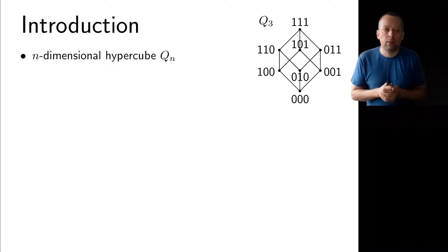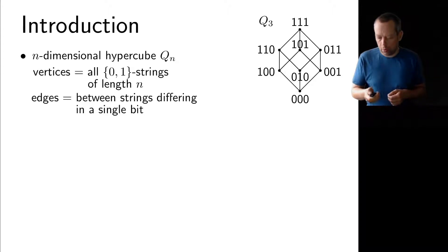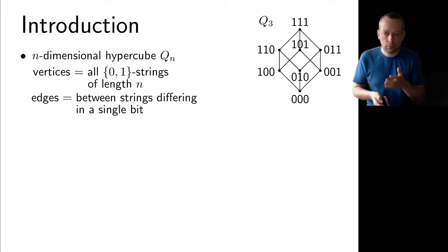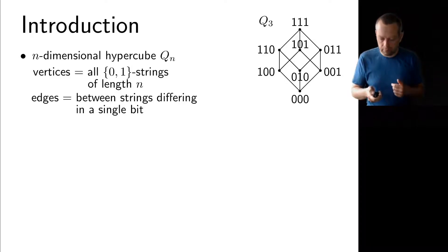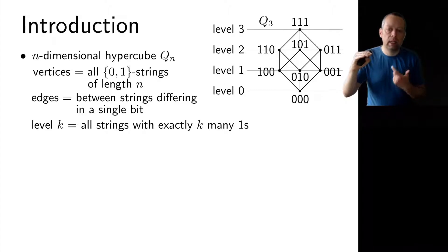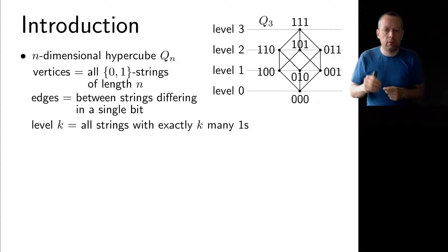This talk is about the n-dimensional hypercube Qn, a very famous family of graphs parameterized by some integer n. The vertices are all binary strings of length n, and two strings are connected by an edge if and only if they differ in flipping only a single bit. As shown in the figure for n equals 3, we arrange vertices into levels where the k-th level contains exactly those strings with Hamming weight k — strings with exactly k ones and n minus k zeros.